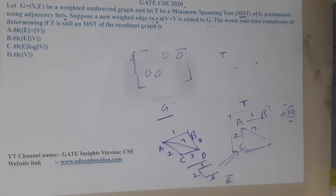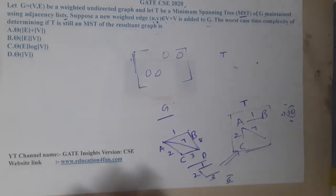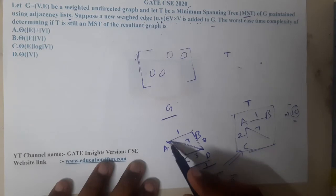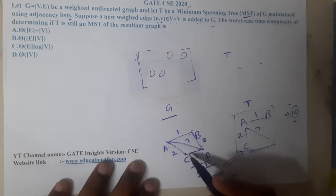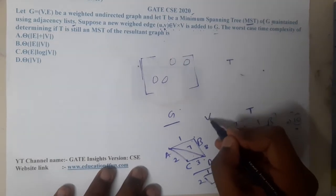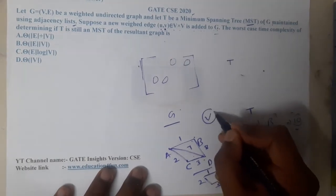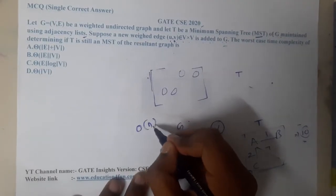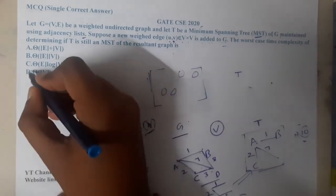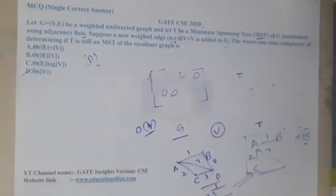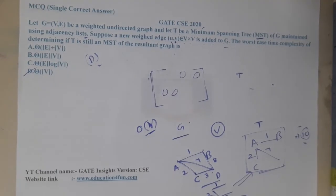It is a simple check: you start from each vertex and verify whether the existing MST T matches at every vertex. Checking at each and every vertex is sufficient, giving us a time complexity of O(V), where V is the number of vertices. So option D is the correct answer.